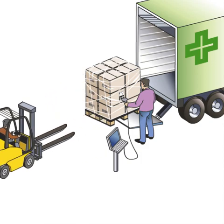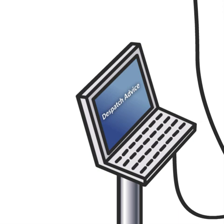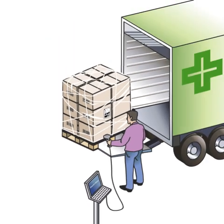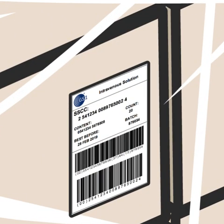When loading is completed, the system generates a dispatch advice and sends it to the receiver of the delivery. It also generates transport instructions for the carrier. The dispatch advice provides details of the shipping units, but it's sent from the seller to the buyer and the carrier can't see it. If additional information is needed on the transport item, it's included in the GS1 logistic label and barcoded to be scanned by the carrier.